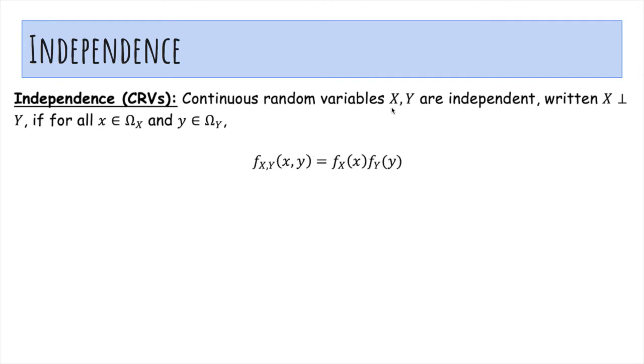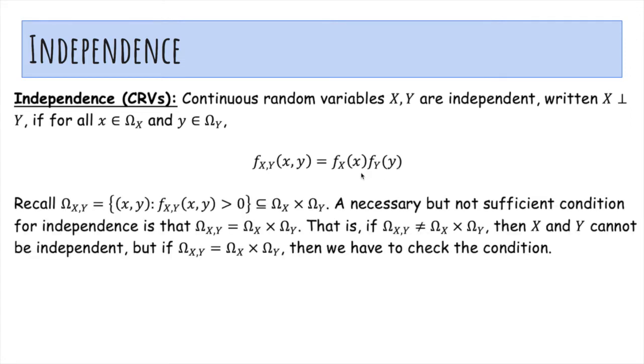For independence, we say that continuous random variables x and y are independent if for all x and y in their range, the joint density is the product of the marginal densities. This is basically the same as the discrete case, except with f's instead of p's. Recall that the joint range is the set of (x,y) where the density is strictly greater than zero.